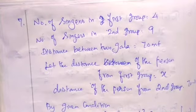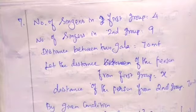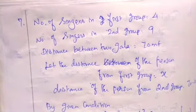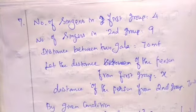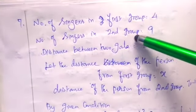The ratio of the sound intensity is equal to the square of the ratio of the corresponding distances. The distance from the first group corresponds to the number of singers: the first group has 4 singers and the second group has 9 singers.